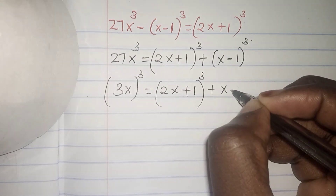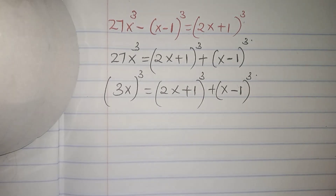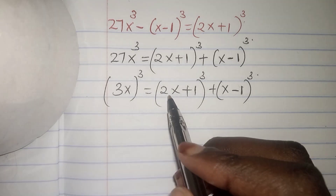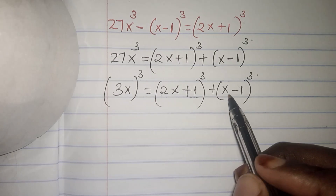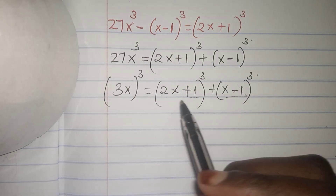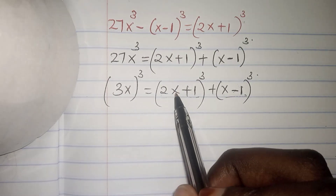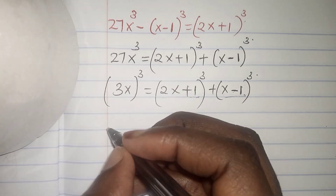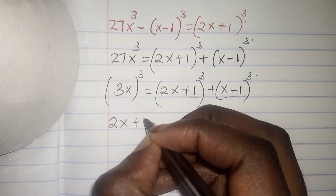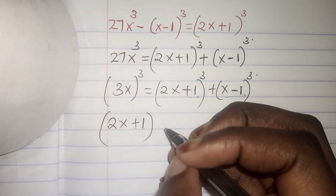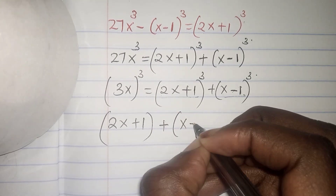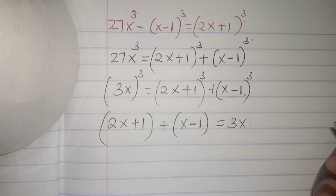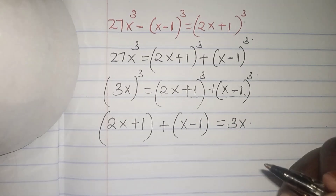Now if you observe kindly, what is in the brackets here and here — if you add them, we are getting 3x: 2x plus x equals 3x, and the constants: 1 minus 1 gives 0. So (2x plus 1) plus (x minus 1) equals 3x.